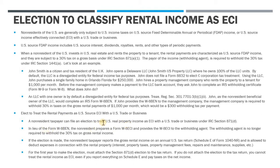What are the mechanics of this election? First, John is going to prepare a W-8 ECI — in addition to or in lieu of the W-8-BEN — and provide that ECI form to the withholding agent. Once the withholding agent, the management company, receives this form, they no longer have to withhold 30% tax on that gross rental income. They just make the payments into John's bank account. John is then obligated to file an annual tax return to report the gross income, report the expenses, and pay tax on a net basis.